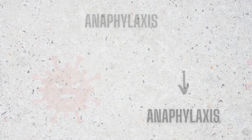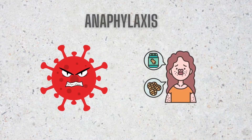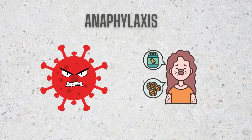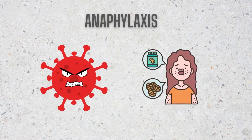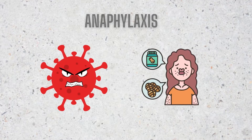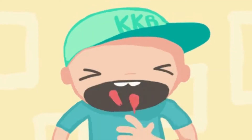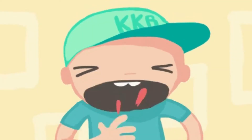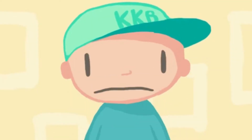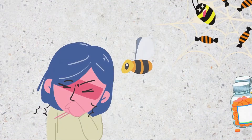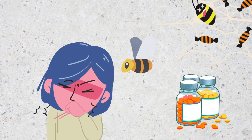Anaphylaxis is a severe, potentially life-threatening allergic reaction. It can occur within seconds or minutes of exposure to something you're allergic to, such as peanuts, or even bee stings, and also certain drugs and medicines.